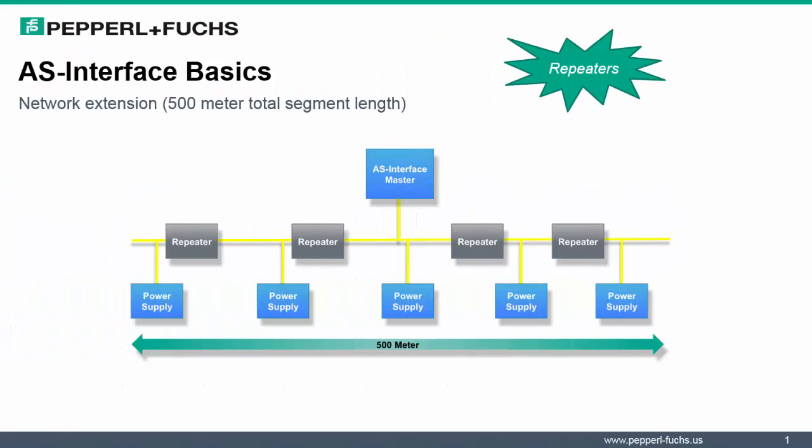Let's look at expanding yet our network further. In the following diagram, we strategically place our AS Interface master in the middle of our network. With the limitation of having two repeaters on each end extending in each direction, we have the ability now to expand our network up to 500 meters. This is a significant value for those networks that require larger, longer lengths.